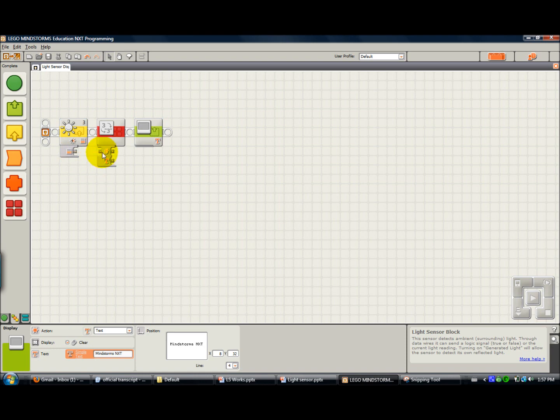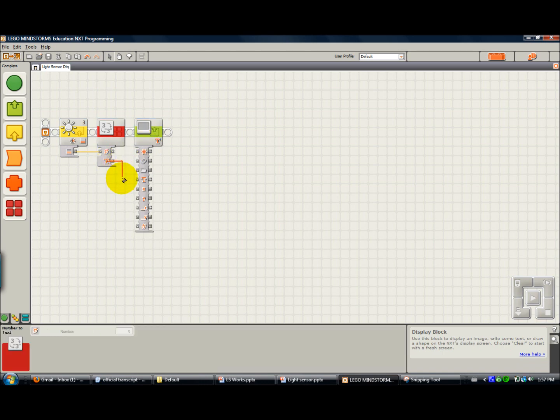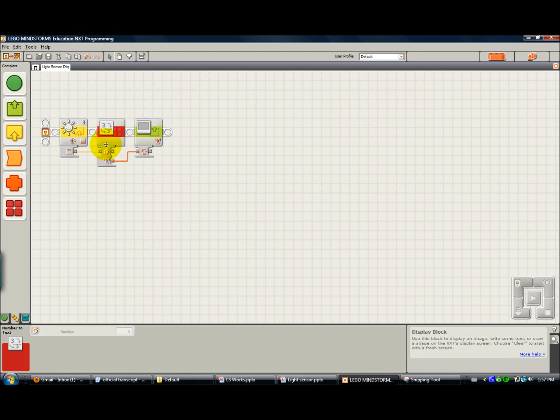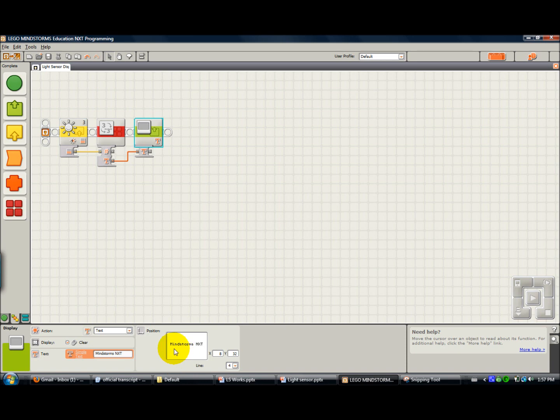Here we're just going to click and drag a wire from here to here. To open up this hub I click right here, and we're going to connect this wire from this port to this port. To close up that hub you can just click right here. This says it's going to display Mindstorms NXT, but this data wire overrides whatever's in the control panel and takes precedence.